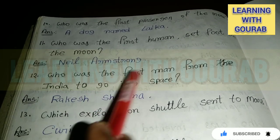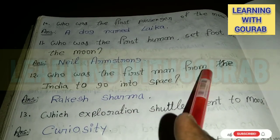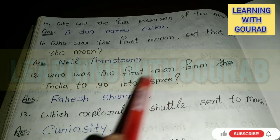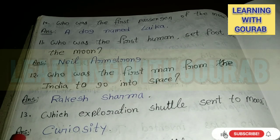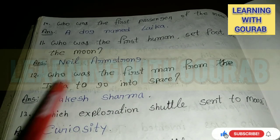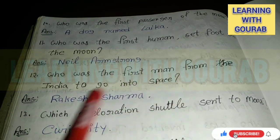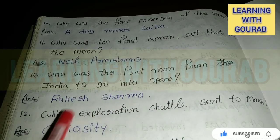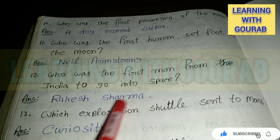Who was the first man from India to go into space? Answer: Rakesh Sharma.